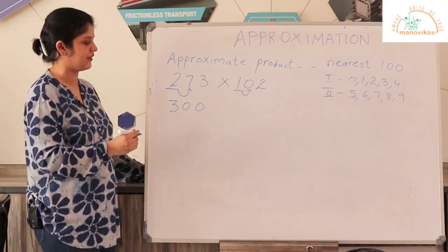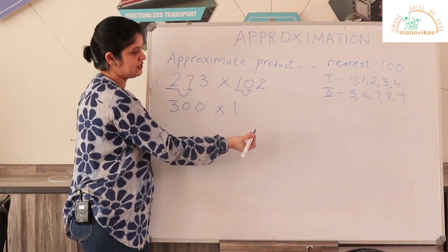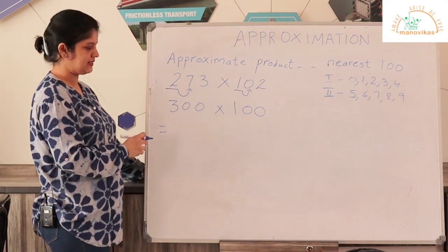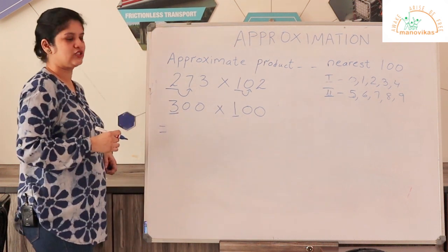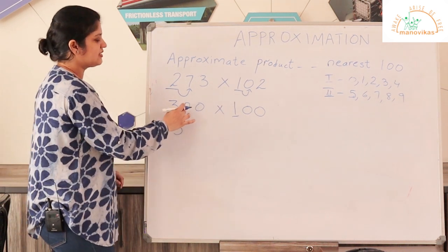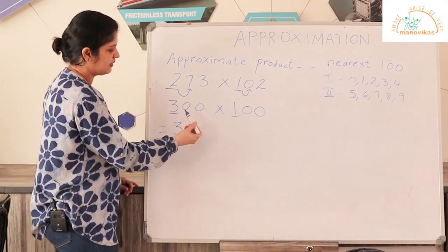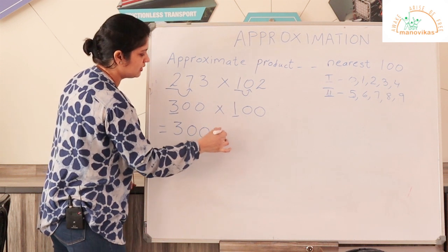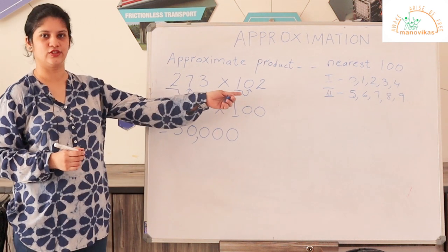So the hundreds place will be increased — 2 changes to 3, followed by zeros: 300. Since we are rounding to the nearest hundred for 102, the digit following 1 is 0. 0 is in the first range, so the hundreds place does not change; it remains as 1, followed by zeros: 100. The multiplication becomes very simple: 300 multiplied by 100. Just do 3 multiplied by 1, which is 3. Then count all the zeros — there are 4 zeros in total — so the final answer is 30,000. That is the approximate product when you multiply these two numbers.